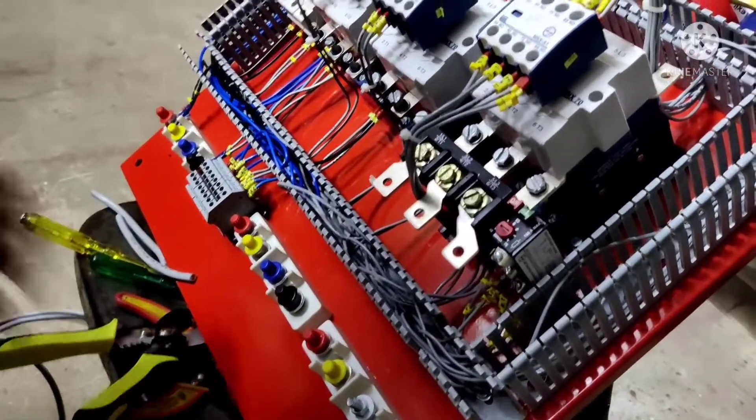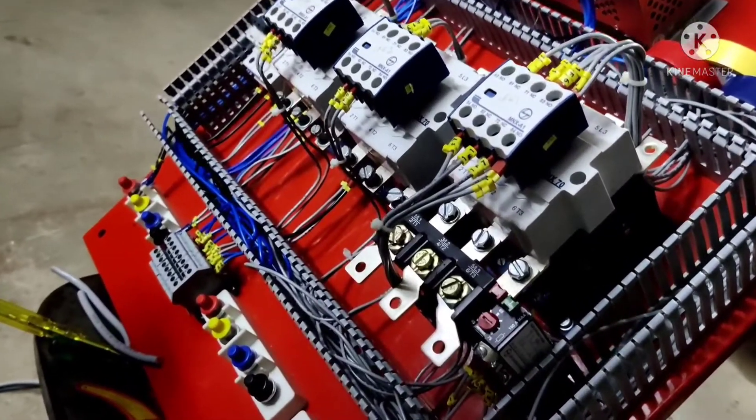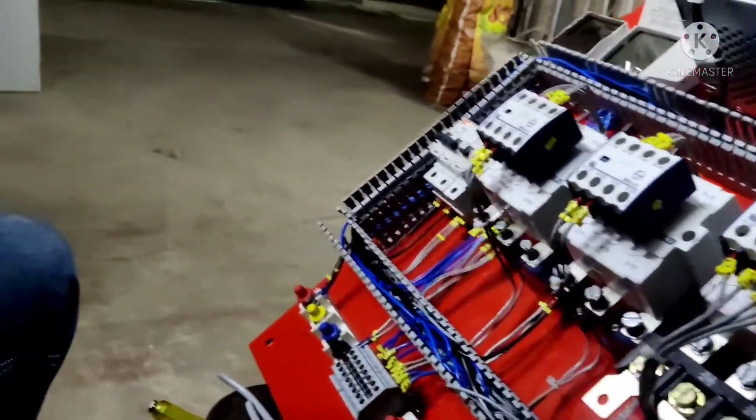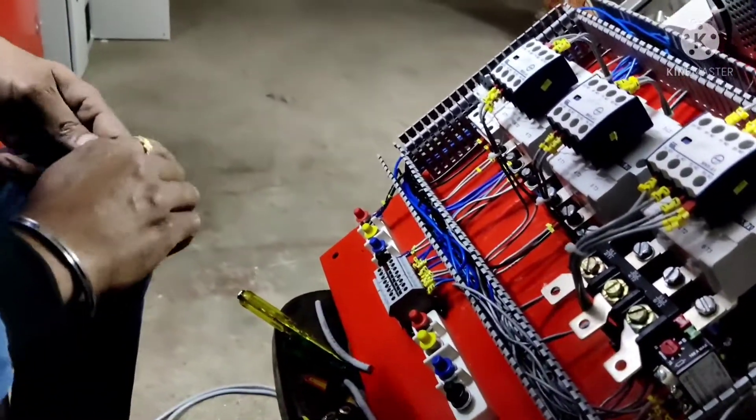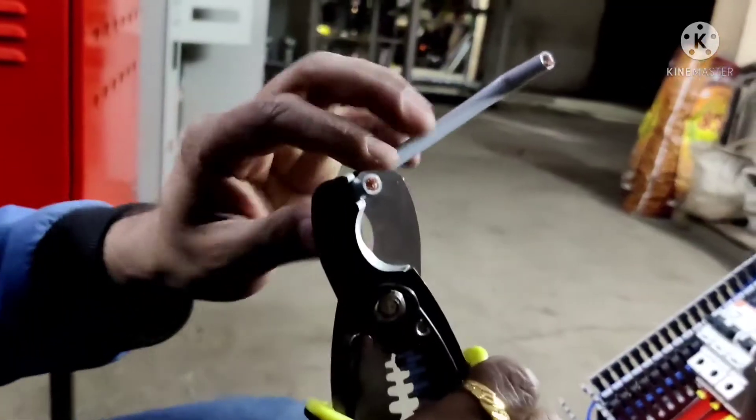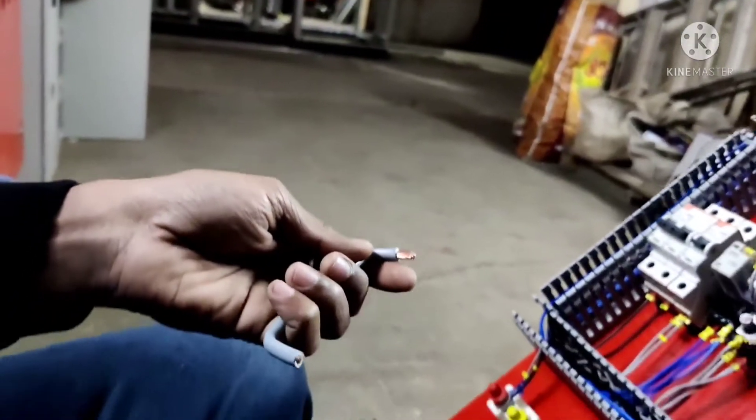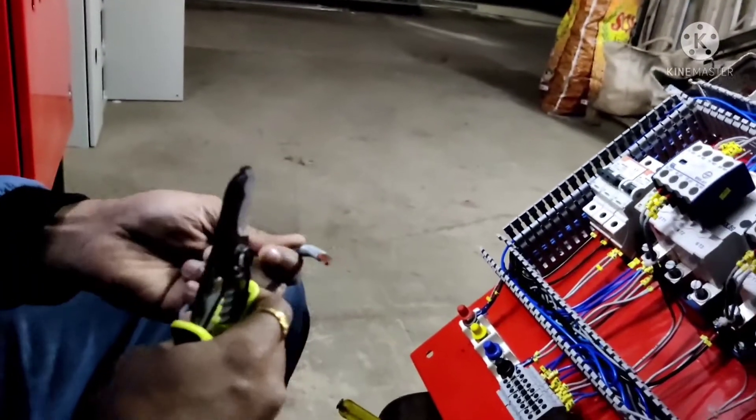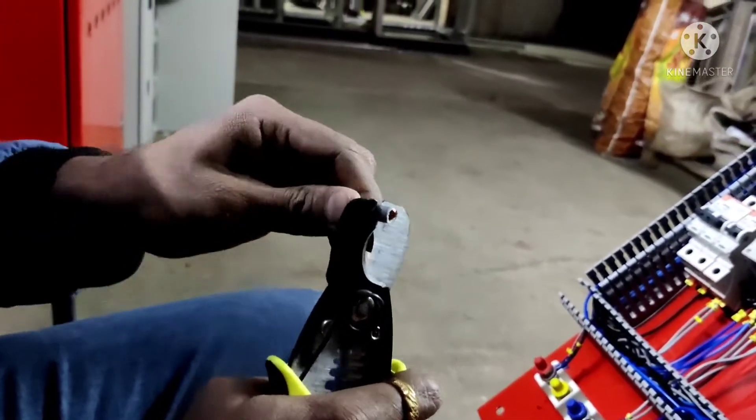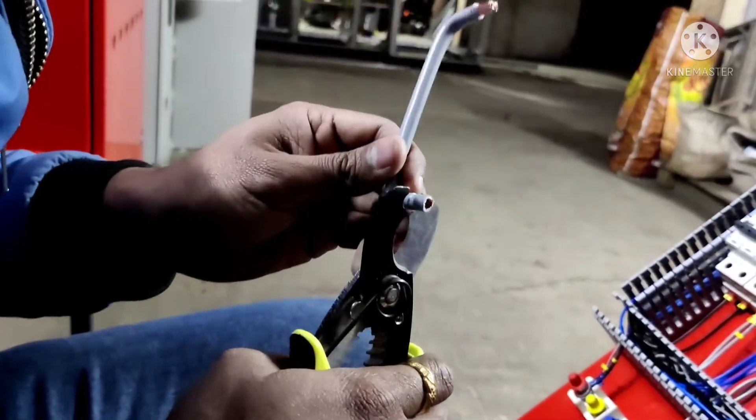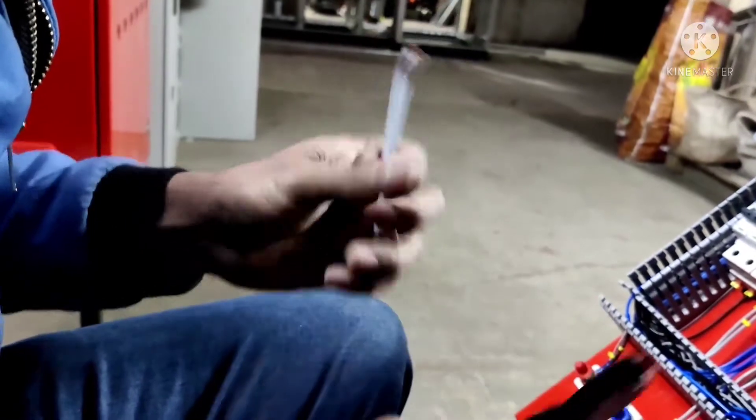Here you can have a look. Now the technician is cutting cables for power wiring purpose. In this panel we have used 16 square mm multi-strand flexible copper cable.